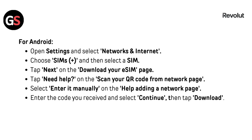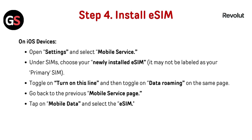For Android, open Settings and select 'Network and Internet,' choose 'SIM,' tap the plus icon, and then select 'Add SIM.' Tap 'Next' on the 'Download your eSIM' page. Tap 'Need help' on the 'Scan your QR code' page, select 'Enter it manually' on the 'Help adding a network' page, enter the code you received, select 'Continue,' then tap 'Download.'